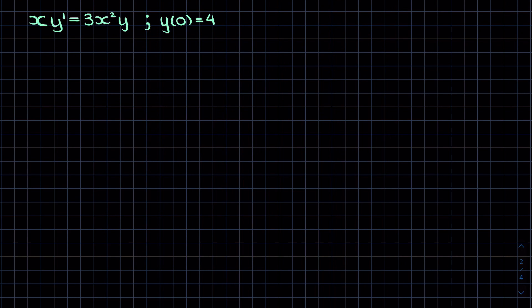Let's try another example. Here we need to get all the x's on one side and all the y's on another side, so let's divide by x. Now we can divide by y and that'll give us our separation of variables.